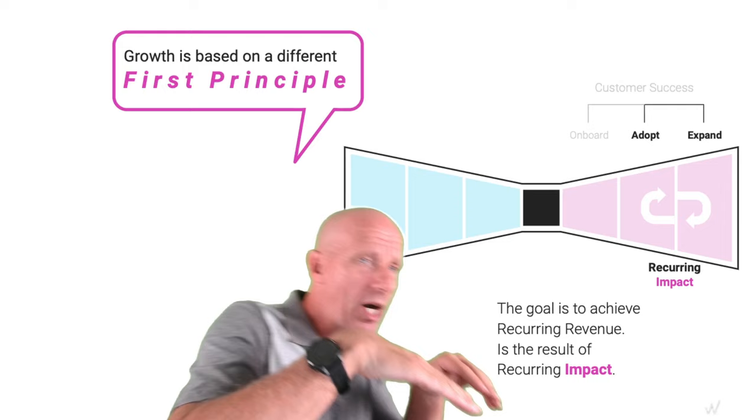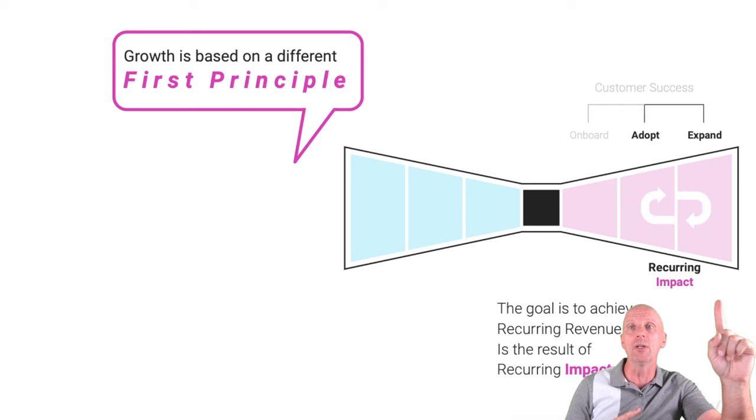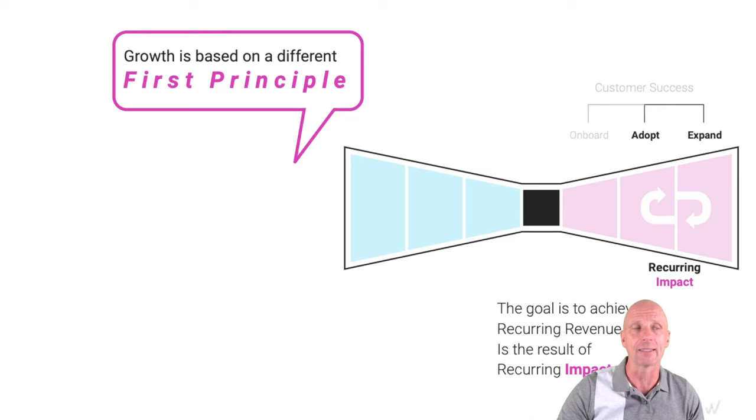That recurring impact is super important — that's what I want to accomplish. I cannot get to recurring impact without first impact. So the first thing I need is to get the customer to first impact. If I get to first impact, then I get to recurring impact. And in order to get to first impact, I need the client and us to agree on what impact we're going to commit to. We have to buy on impact.